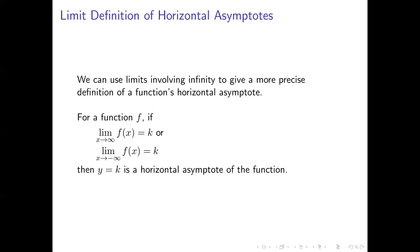It can happen, and often does happen, that both of those limits equal k. In that case, we still have a horizontal asymptote at y equals k. So that's the definition of a horizontal asymptote using limits. Now let's take a look at how we can apply it to find horizontal asymptotes analytically.